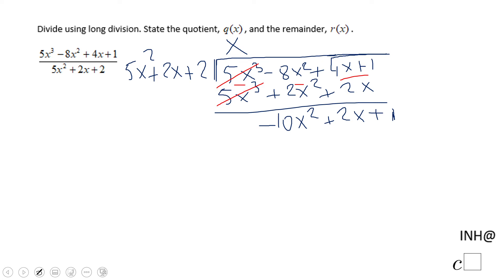And again, we're going to go back to guess and check. What should I multiply 5x squared to get negative 10x squared? That will be negative 2.